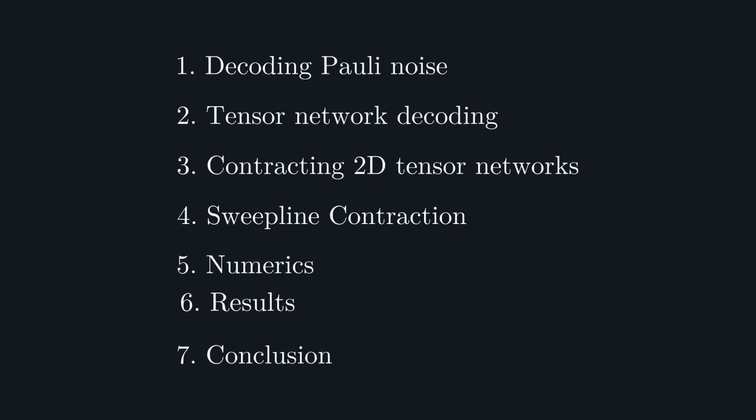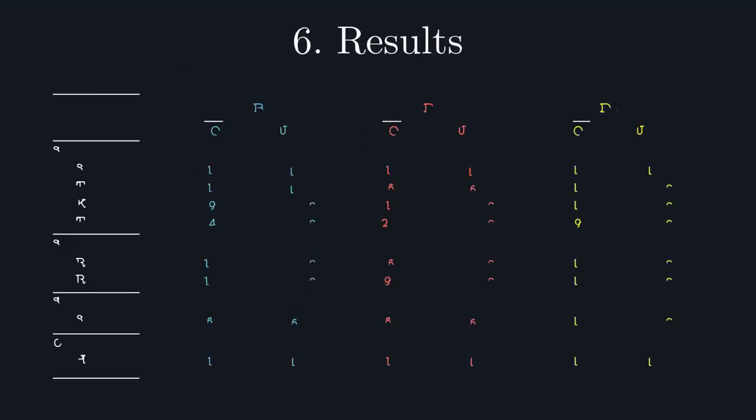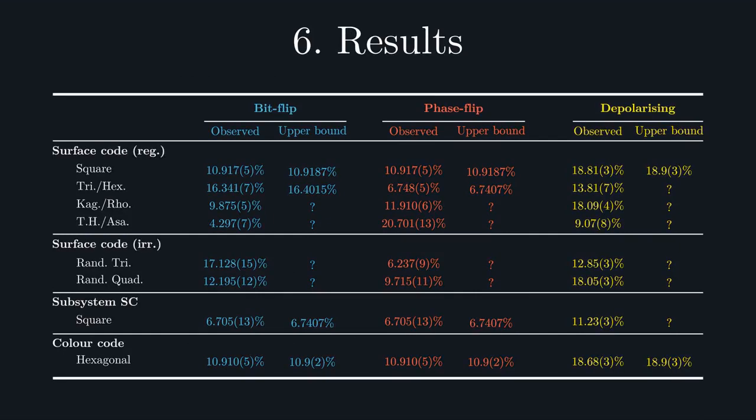And now we turn to the numerical results. Here is a table of all the threshold estimates. The rows correspond to the different codes, arranged into regular surface codes, irregular surface codes, the subsystem surface code, and finally, the color code. The columns correspond to the three noise models. Namely, bit flip noise, phase flip noise, and depolarizing noise.